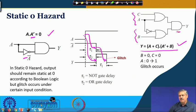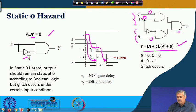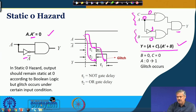Consider the input combination B equal to 0, C equal to 0, and A going from 0 to 1. Initially A is at 0, making A-bar at 1. So the first OR gate output is 0 and the second is 1. For the AND gate we need both outputs to be 1 for the final output to be 0. When A goes from 0 to 1, the AND gate after propagation delay goes to 1.